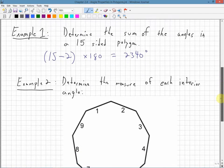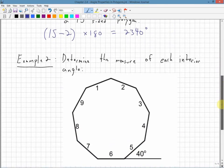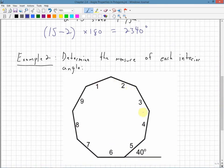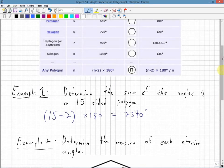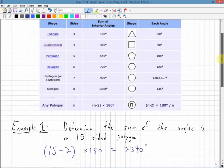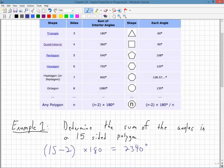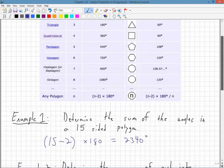Example two, determine the measure of each interior angle. So here I have the number of sides, it's nine. If I go above, I remember that each angle, as long as all the sides are equal, a regular polygon I think it's called, as long as all the sides are equal.